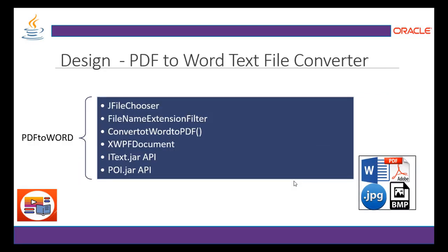Next, we are going to see the PDF to Word text file converter. MS Word itself has a print method and already has a PDF writing and conversion feature, but we can also implement it in Java. Converting from PDF to Word is mostly the difficult direction. Here we are going to use JFileChooser with JFrame or the Swing API, with a filename extension filter to convert Word to PDF. The converter will be implemented using the XWPFDocument class, the iText jar file, and the POI API.